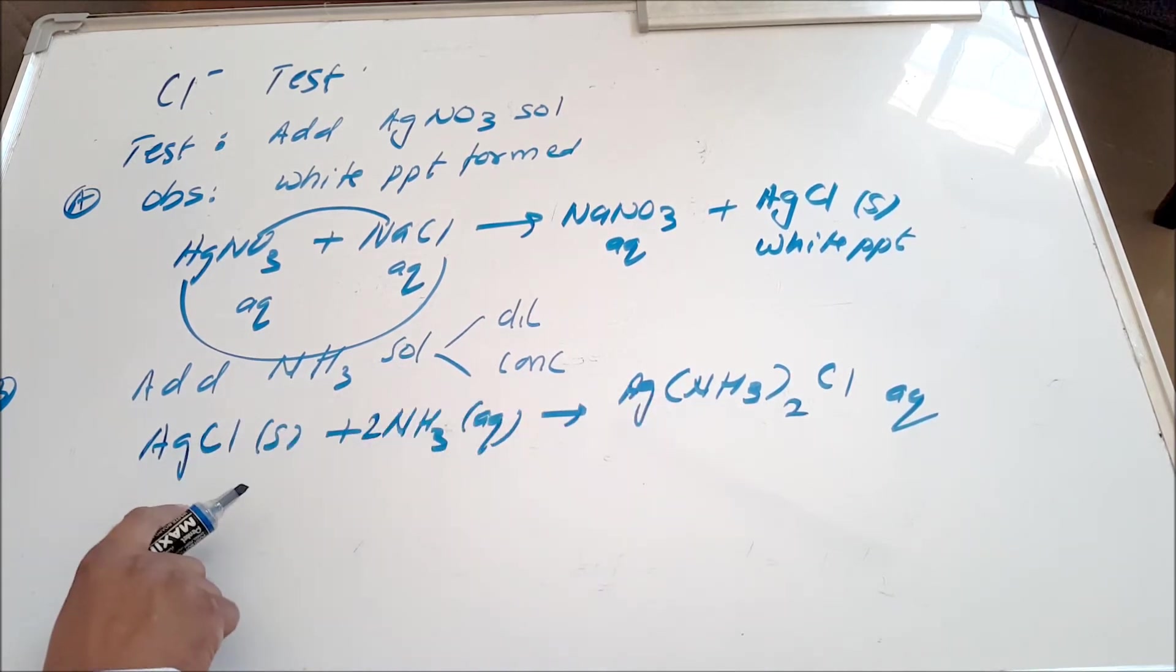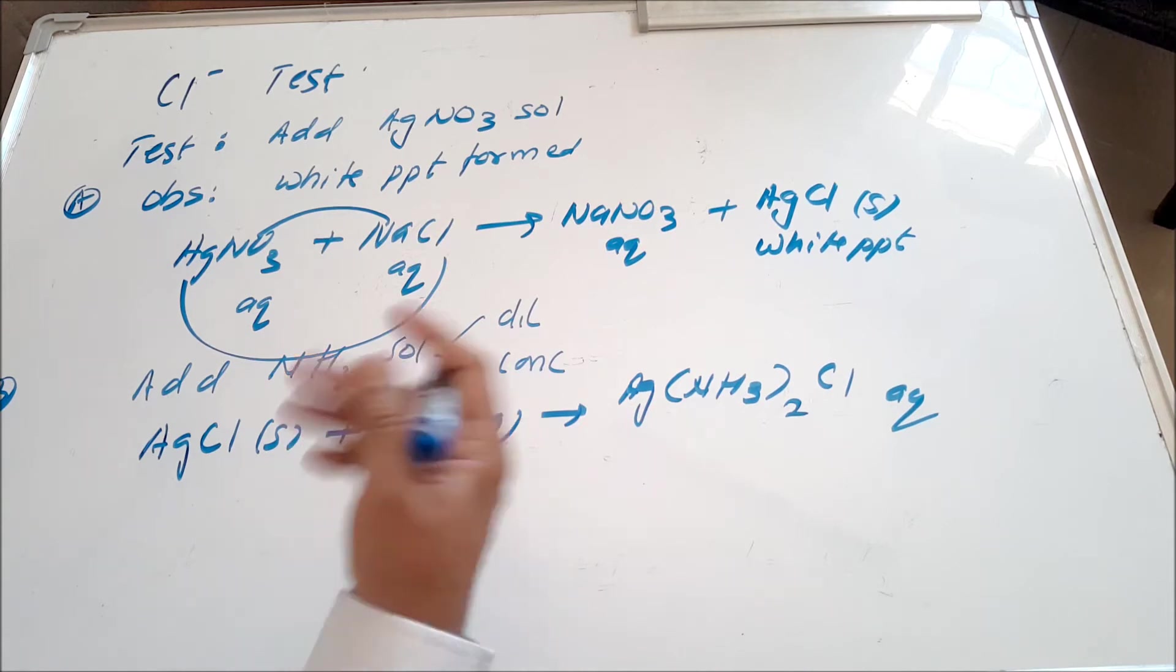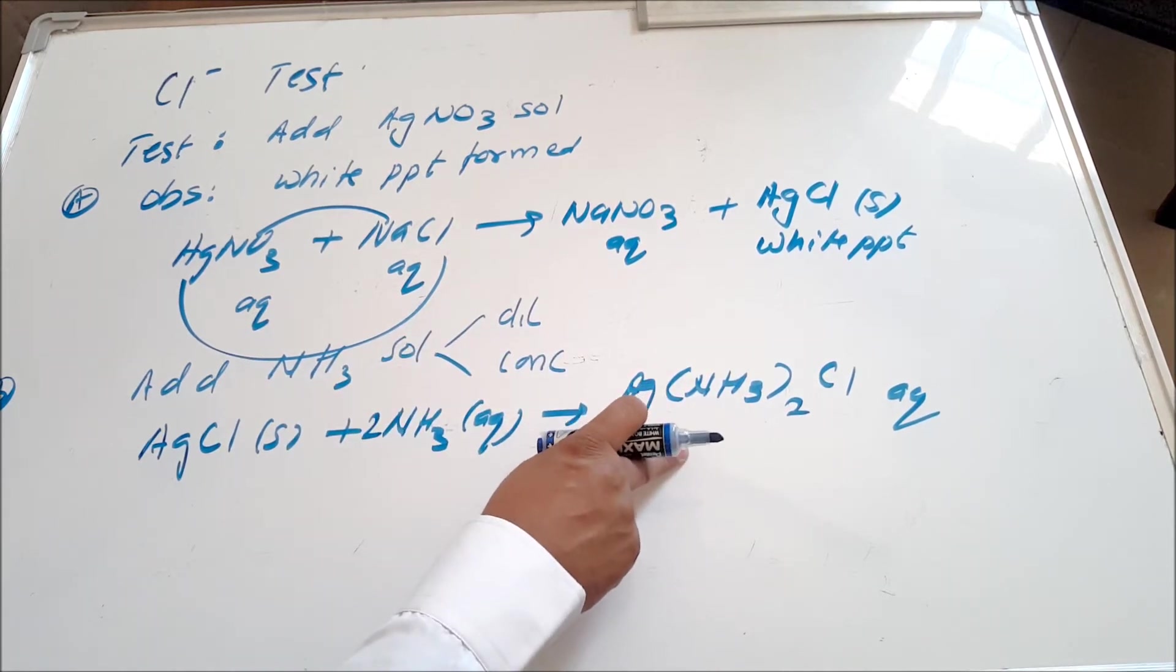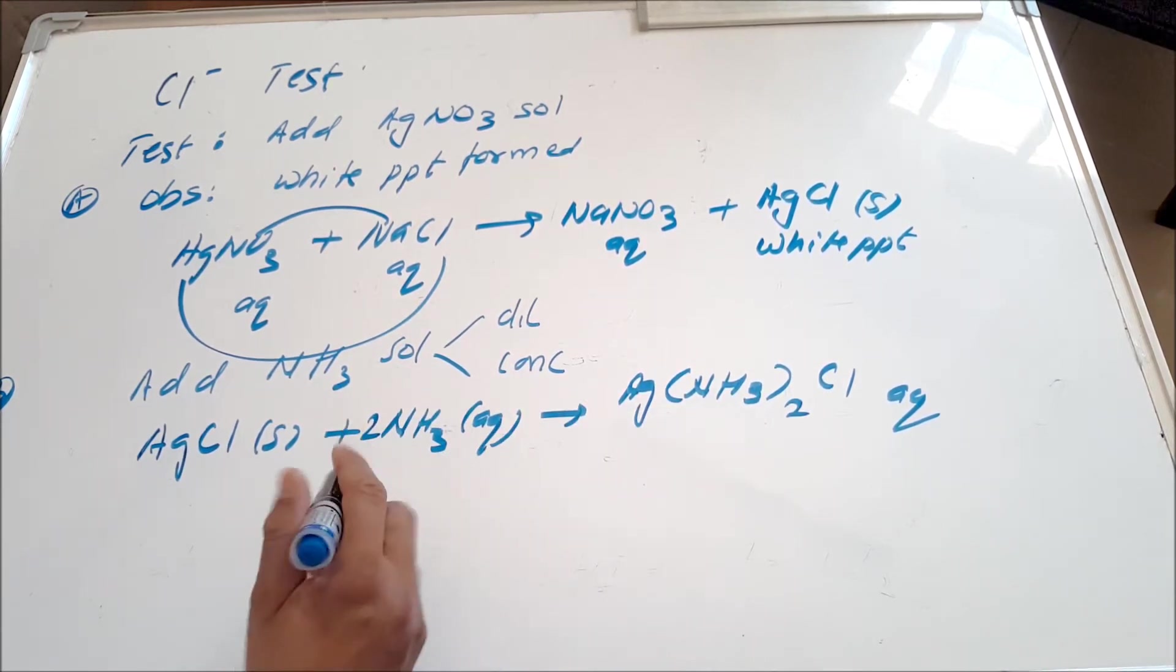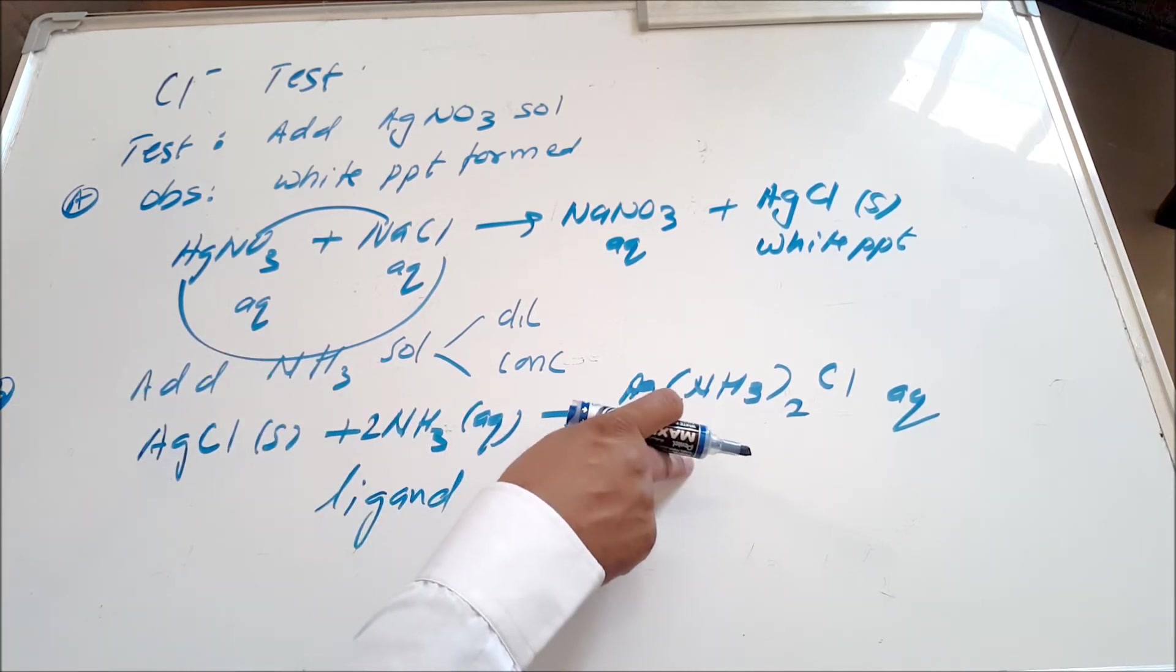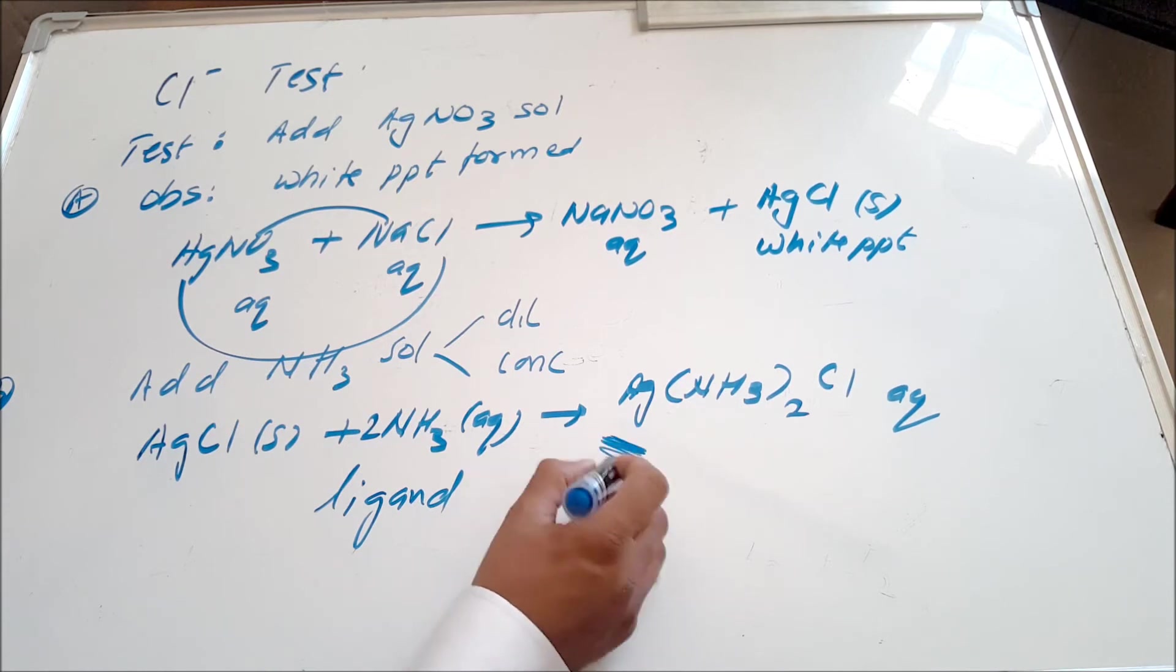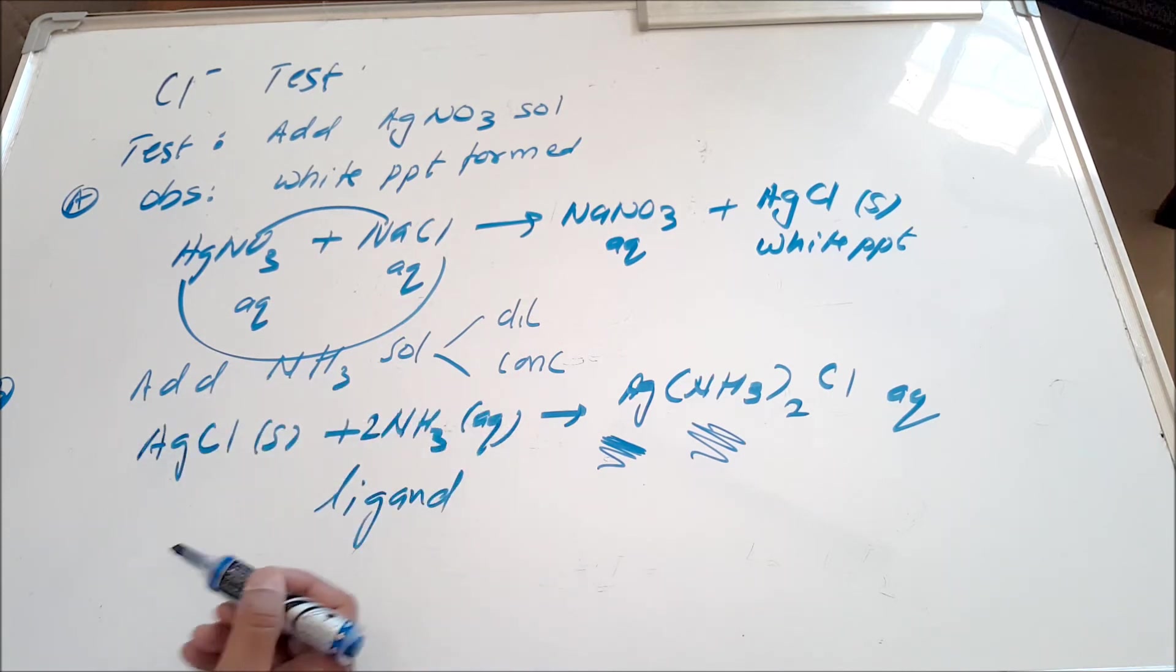So what happens is your white precipitate dissolves in ammonia. Now you might get some questions because it's part of the A level, but I have seen some old AS MCQs where they do ask you something about ammonia being a ligand. You will study in A level that a complex is made up of a transition metal ion and a ligand. Ammonia is acting as a complexing agent or a ligand, so that's good information for you to keep in mind.